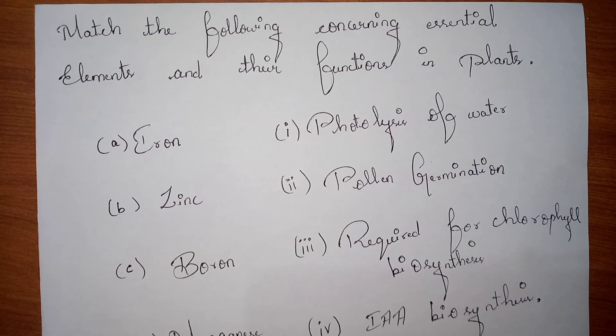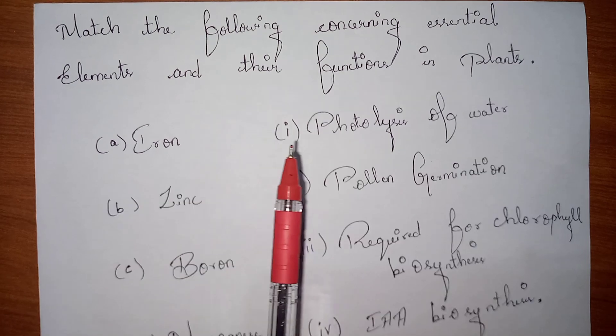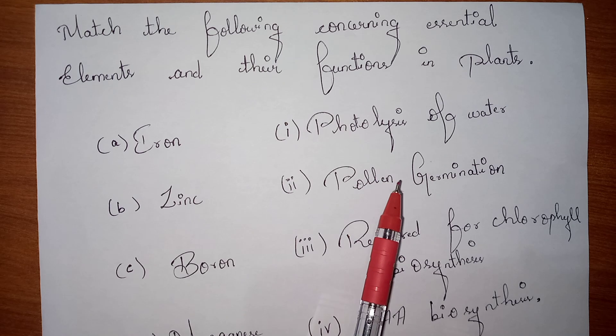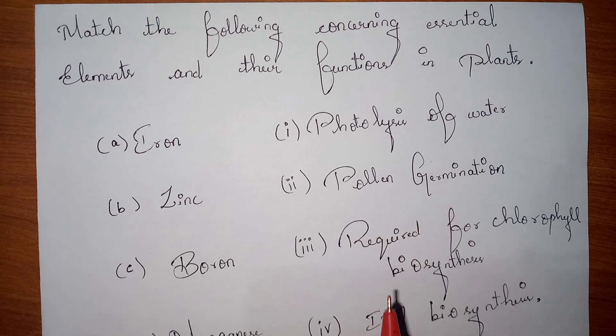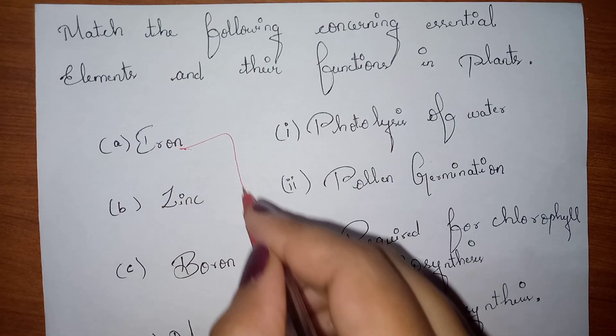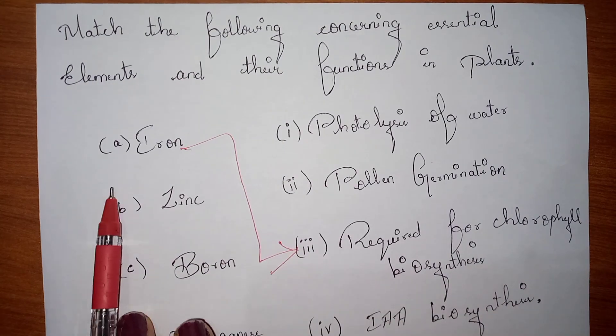Now the next question is: Match the following concerning essential elements and their functions in plants. They are given some elements here - Iron, Zinc, Boron, Manganese - and we need to match with this column, what functions it will do in the plants. We know that Iron, it is required for the chlorophyll biosynthesis, that is for option A. Option 3 is the correct match.